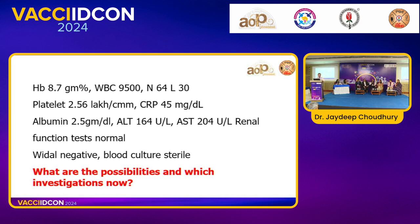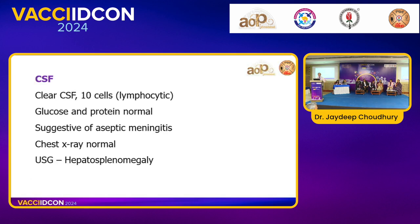Considering the presentation with organomegaly, a rickettsial cause should be considered, and empirical doxycycline is now accepted as part of the norm. A recent paper supports this approach. Similar to how we give IV acyclovir pending HSV confirmation, doxycycline can be started empirically at this stage.